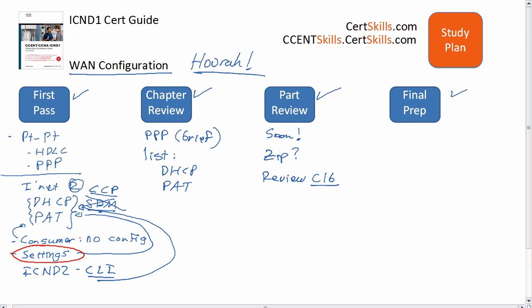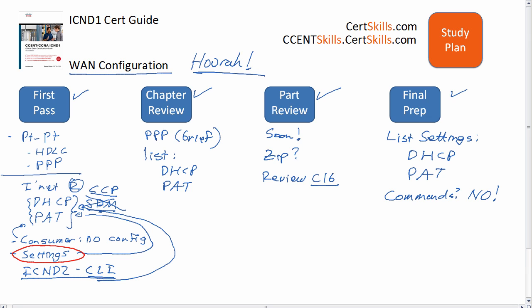When you get to final review, again make a list of all the settings you can think of for DHCP and for PAT, and make sure you understand those. Don't worry about the fact that you don't know commands for DHCP and PAT — just know that when you get to the ICND2 book, assuming you're marching towards CCNA, you will see the command-line interface commands for these features. That's it for this chapter — congratulations for getting through all the new material in the book.